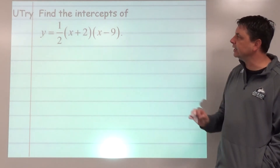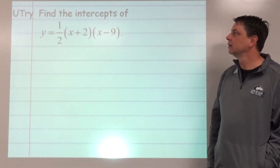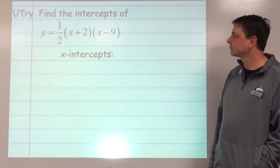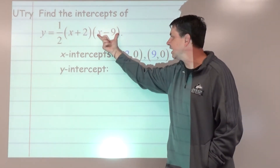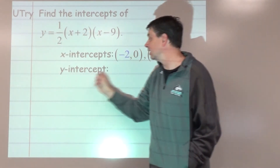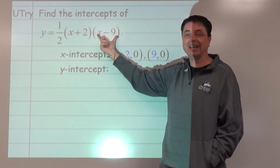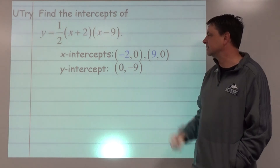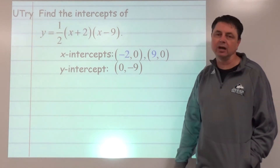You try: pause and find the x-intercepts and y-intercept of the given function. For the x-intercepts, think opposite: negative 2 comma 0 and positive 9 comma 0. For the y-intercept, substitute 0 for x. The one-half comes into play: 0 times 0 gives 2 times negative 9 equals negative 18, and half of that is negative 9. So the y-intercept is (0, negative 9).